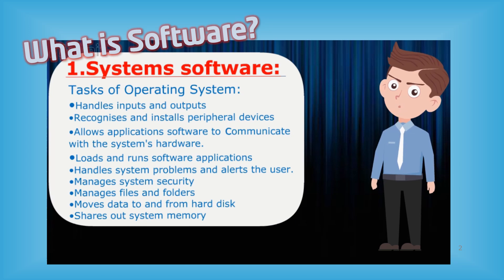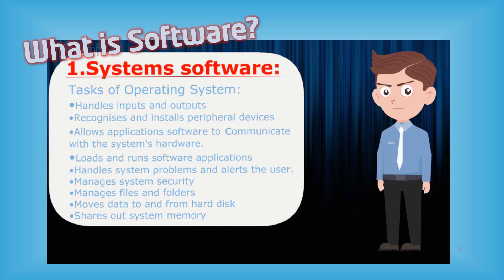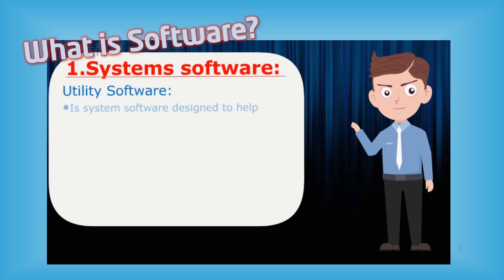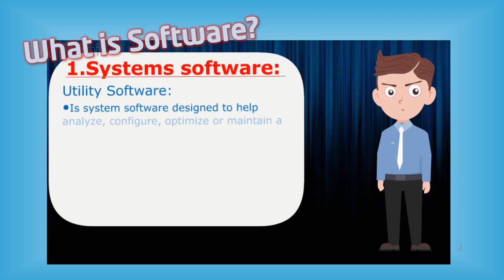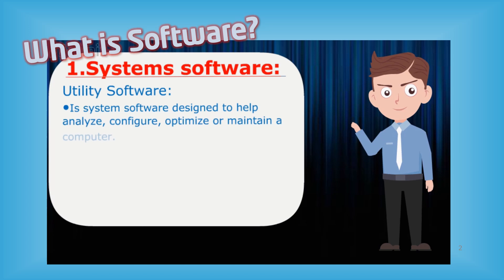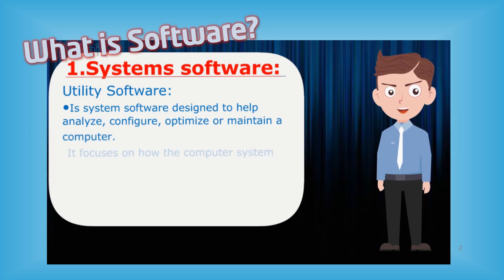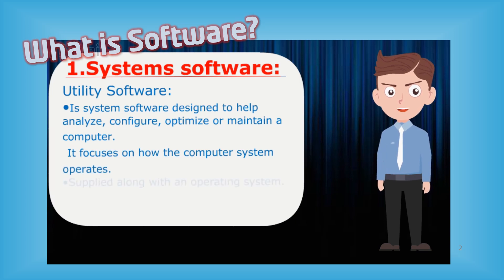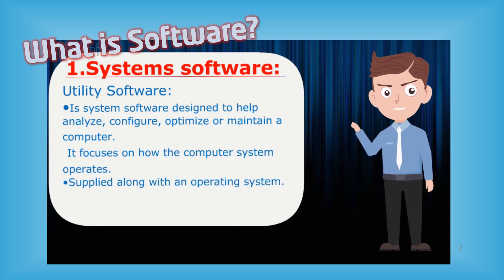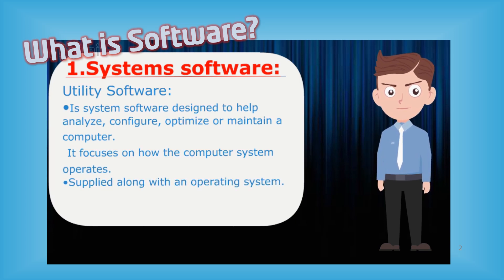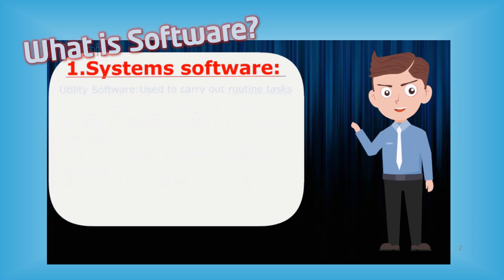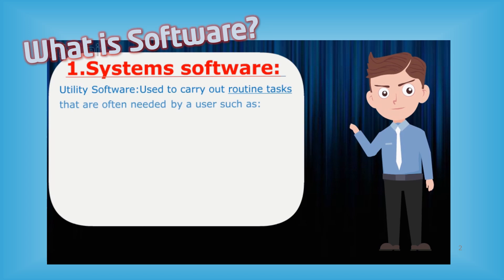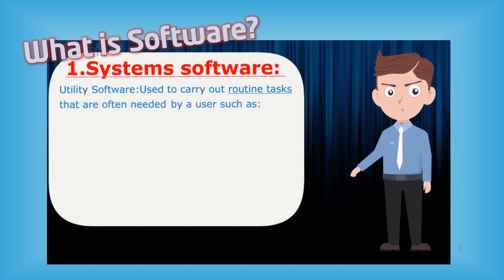Next, utility software. It is system software designed to help analyze, configure, optimize, or maintain a computer system. It focuses on how the computer system operates and is supplied along with an operating system. Utility software is used to carry out routine tasks often needed by a user, such as compressing a file to save space on backing storage.